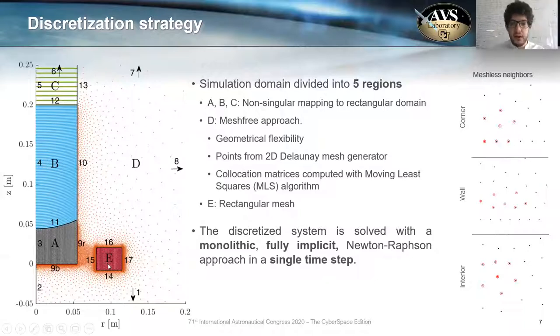Finally, for region E, we choose a rectangular mesh, but if we don't have a rectangular shape, we can always use a non-singular mapping. This discretized system of equations is solved with a monolithic, fully-implicit Newton-Raphson approach. And the fact that this is fully-implicit allows us to compute the steady-state solution in a single time step, which is extremely computationally efficient.